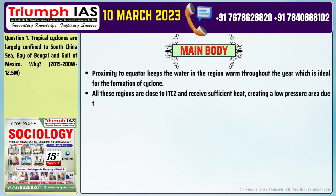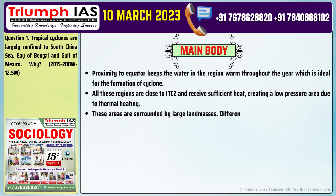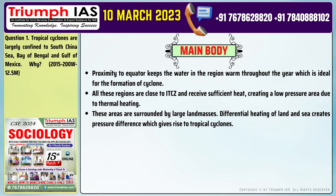Number 3: These areas are surrounded by large land masses. Differential heating of land and sea creates pressure difference which gives rise to tropical cyclones. Number 4: Coriolis force plays an important role in the generation of tropical cyclones, which is normally high near the South China Sea, Bay of Bengal and Gulf of Mexico.